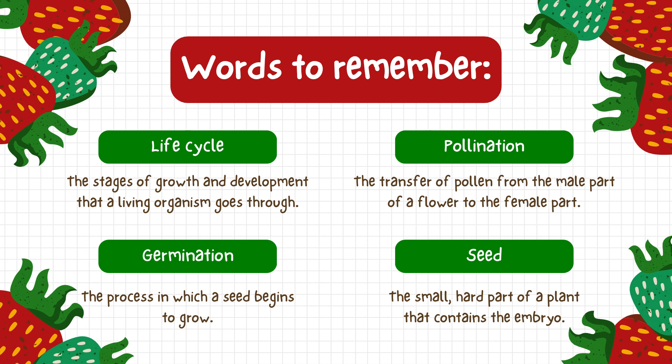Words to remember. What is a life cycle? A life cycle refers to the stages of growth and development that a living organism goes through. Pollination is the transfer of pollen from the male part of a flower to the female part.